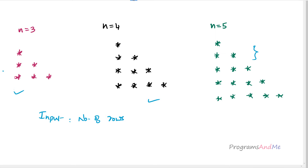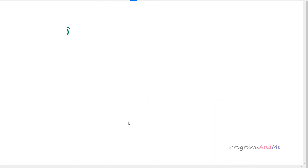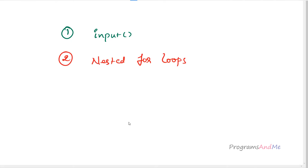Next let's see the requirements of this program — which concepts you need to know before writing it. In this program we are using the input function to take input from the user, nested for loops (a for loop inside another for loop), and the print function to print the output. I'll assume you know how the input and print functions work, and we'll talk about the nested for loop as we use it. So let's write the program.